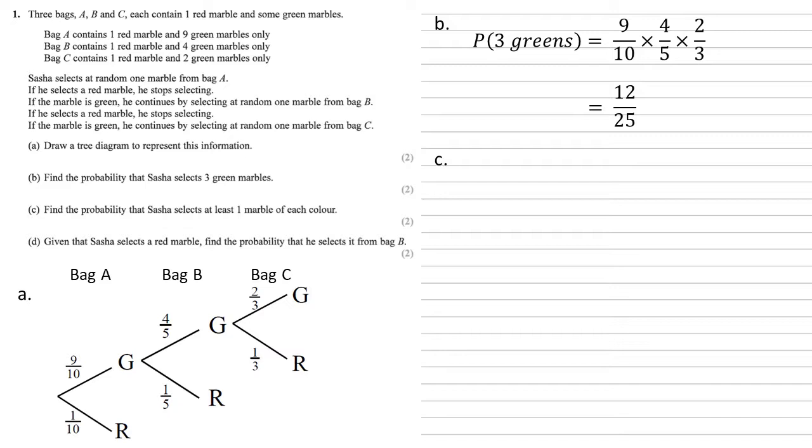For part C, we need to find the probability that Sasha selects at least one marble of each color. So I've done this by looking along the paths and looking at which events lead to at least one marble of each color. We could have green from bag A and then a red from bag B. We could have two greens to start with and then a red from bag C. So they're the only options that give us green and red.